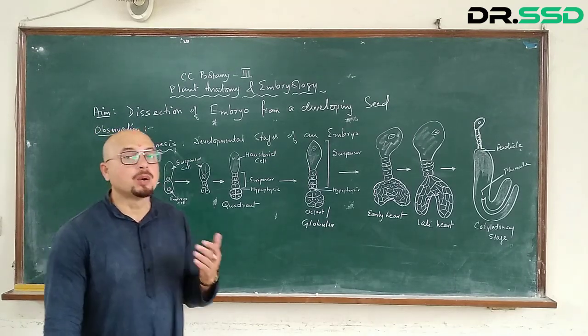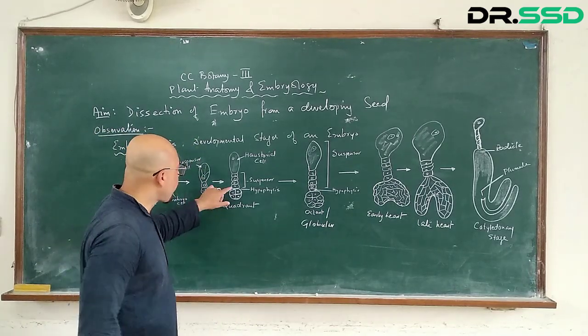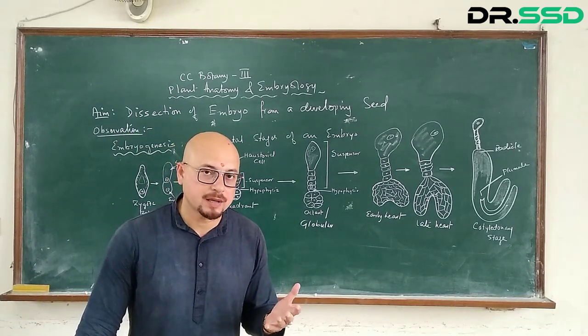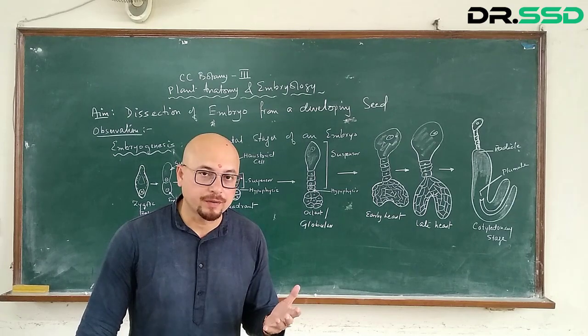Hypo means below. So that means hypophysis cell is below the suspensor which is also helping in absorption of nutrients and supplying it to the developing embryo.